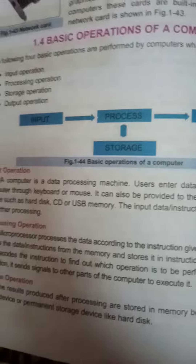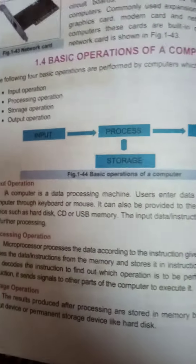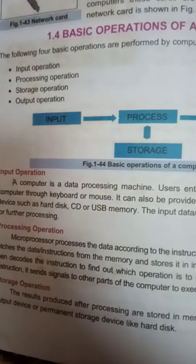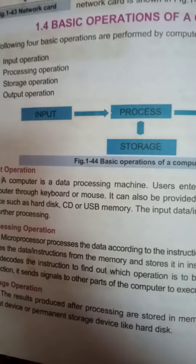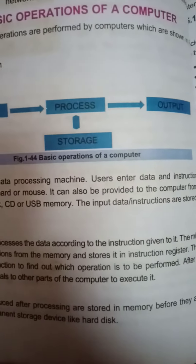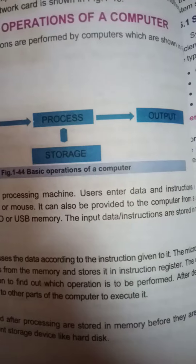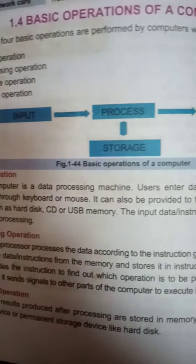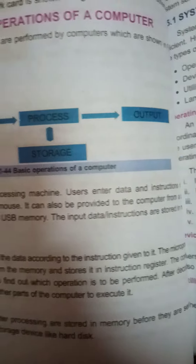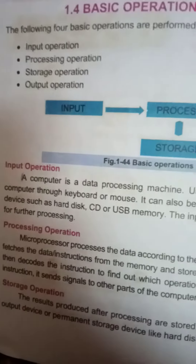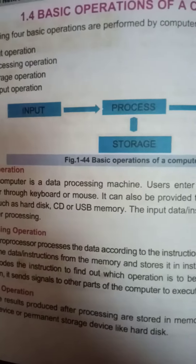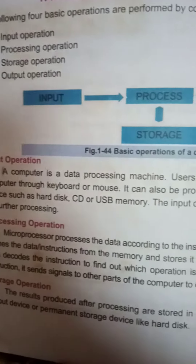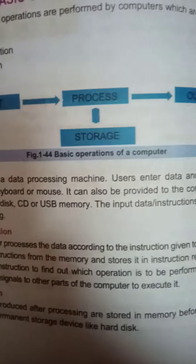The next operation is processing. In processing, we will process the data according to the instructions given to the computer. First of all, it will fetch the instruction from the memory, then store the instruction in the instruction register, then decode the instruction to find out which operation is to be performed. After decoding, it sends signals to the parts of the computer to execute it.